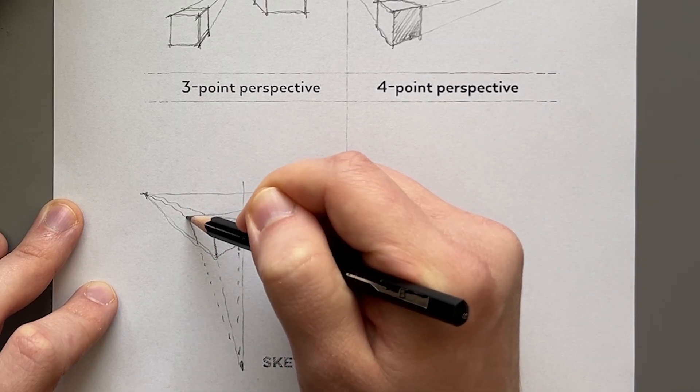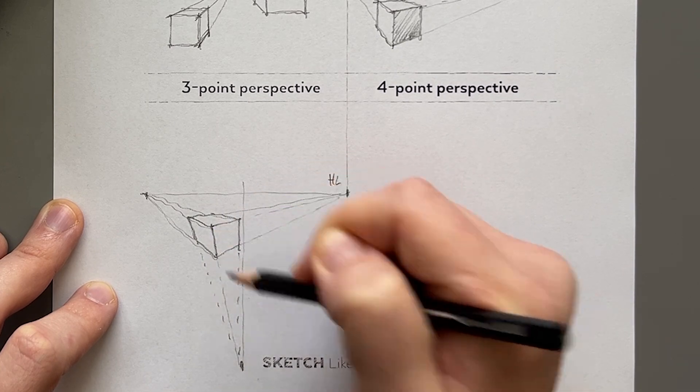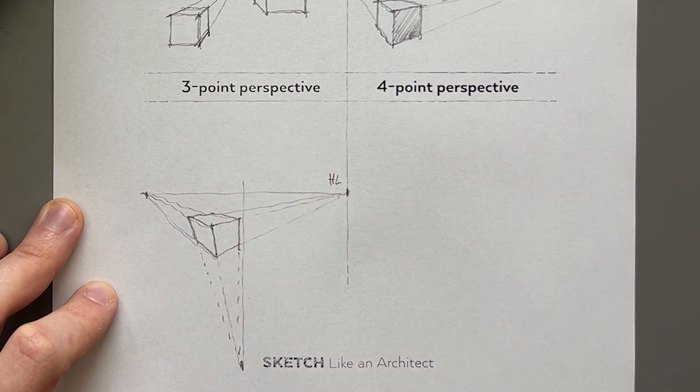So we get a little bit more dynamic view of the box, and the lines and edges—they all converge to one of the vanishing points.